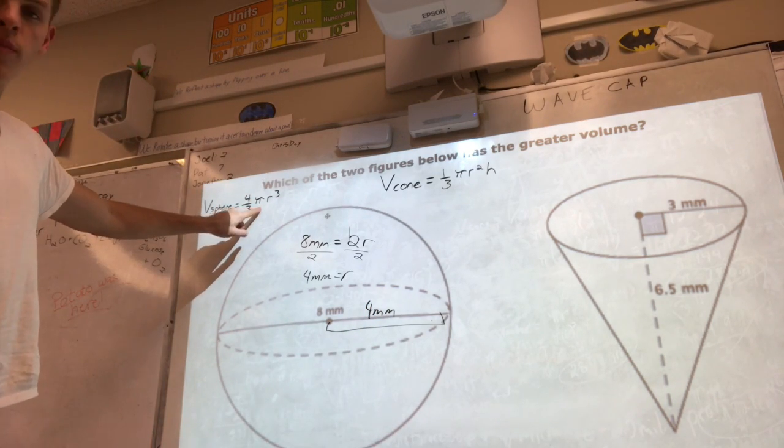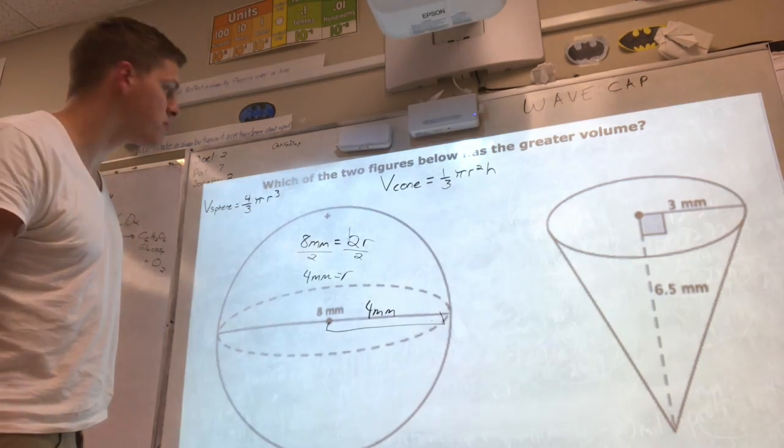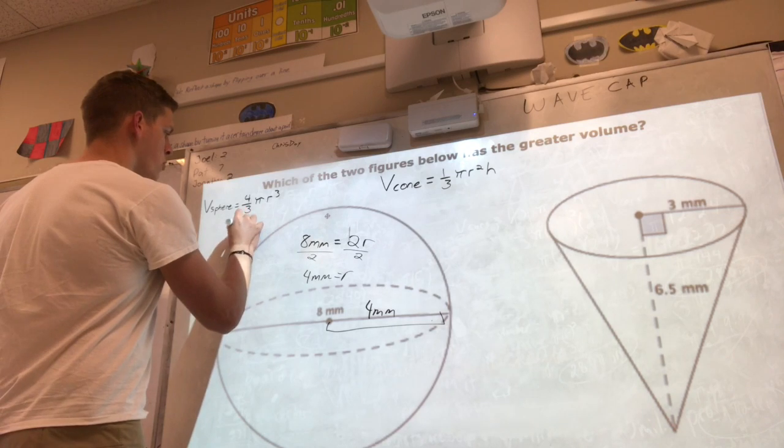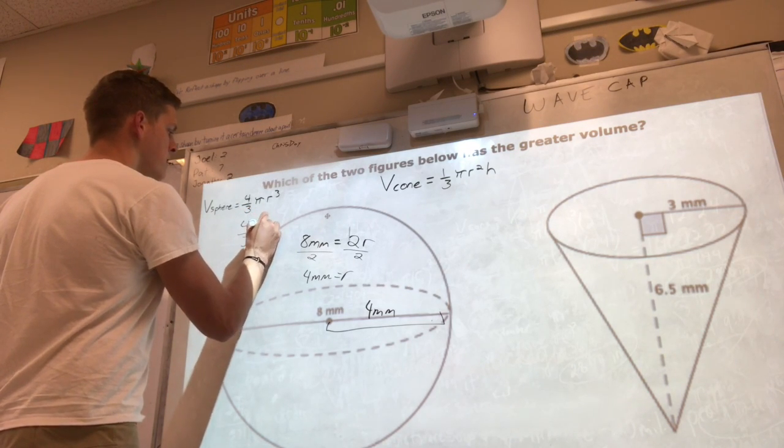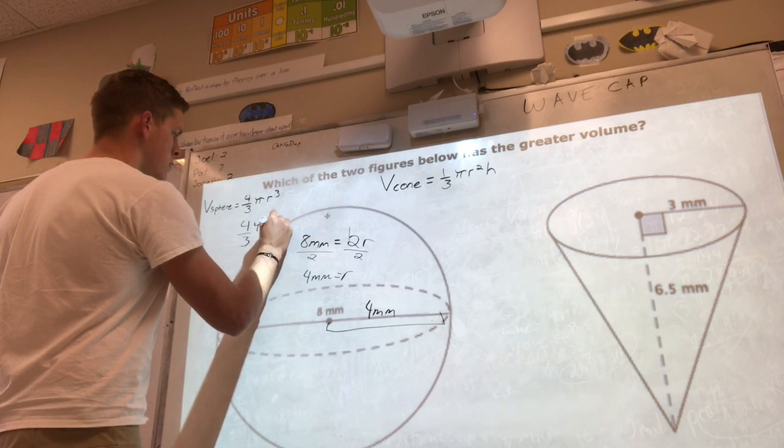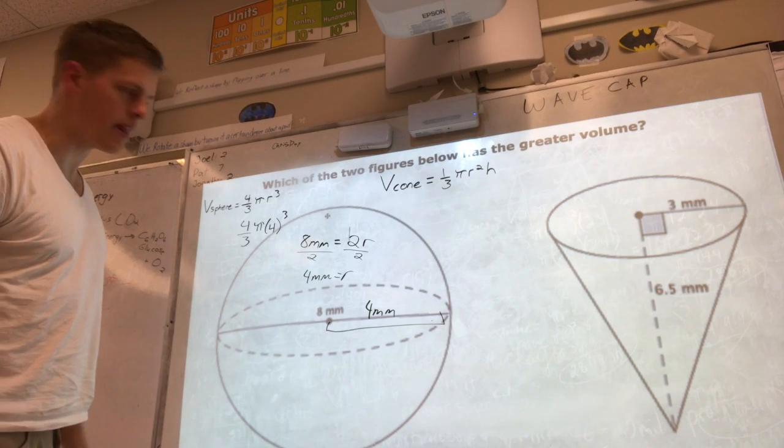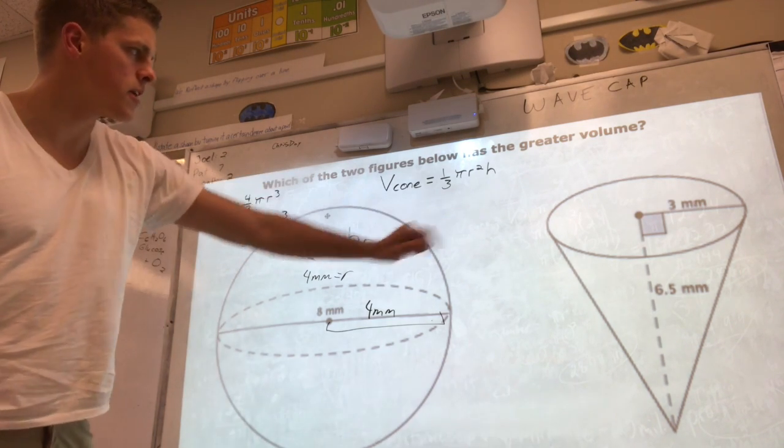That should give us enough information. We already know what pi is. I'm actually just gonna leave my answer in terms of pi. So 4/3 pi and then 4, we're gonna leave it that way for now.